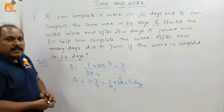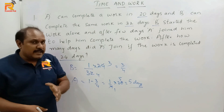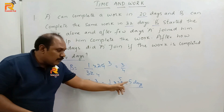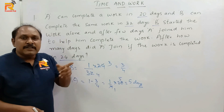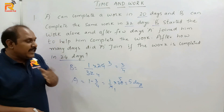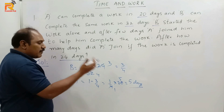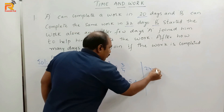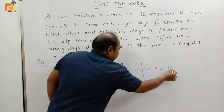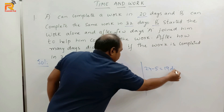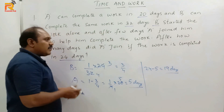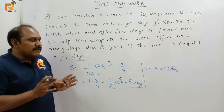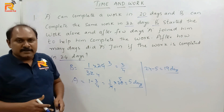But which 5 days? A was not there from the beginning. The question is after how many days did A join. A worked for only 5 days — the last 5 days out of 24. So after how many days did A join? Our answer is 24 minus 5, which is 19 days. So if you can understand the question clearly, we can answer these types of questions in a very simple way using this method.